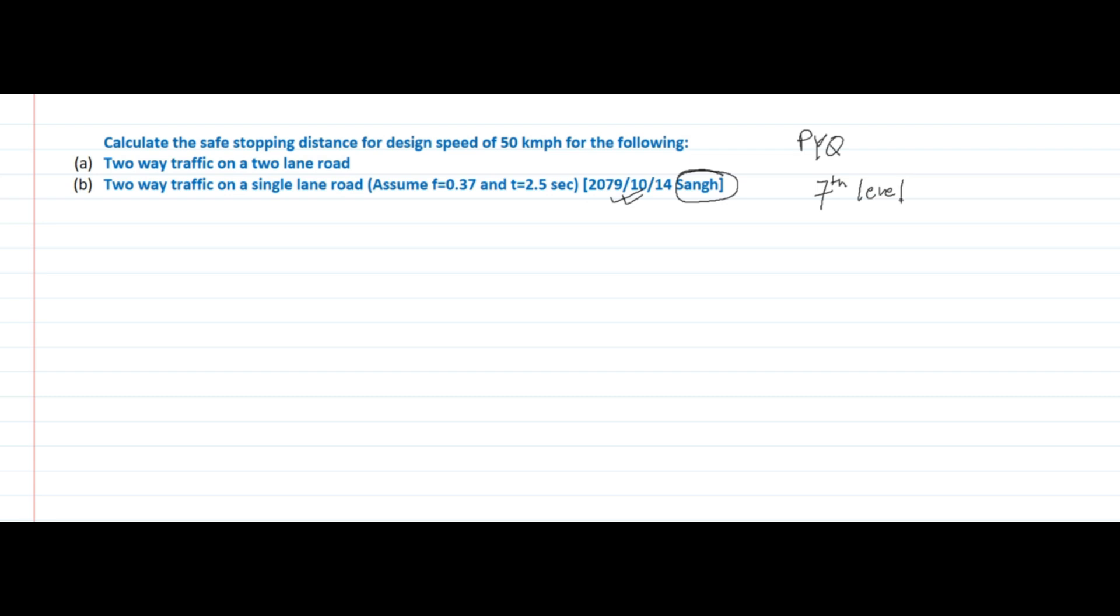This is quite a simple question. Let's see: Calculate the safe stopping distance for a design speed of 50 km per hour for the following: (a) two-way traffic on a two-lane road, and (b) two-way traffic on a single lane road. First of all, we need to calculate stopping sight distance SSD.